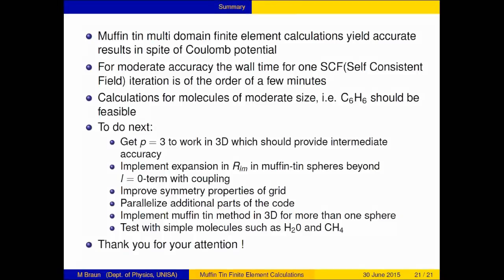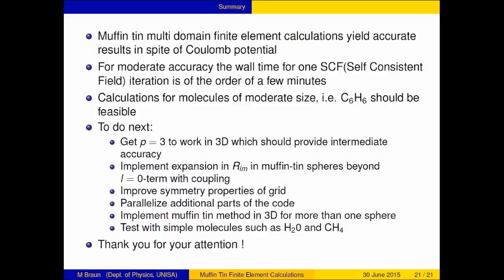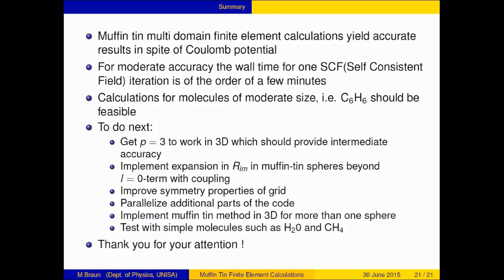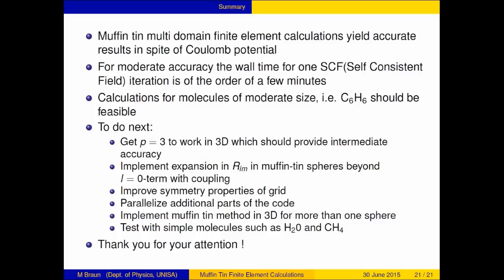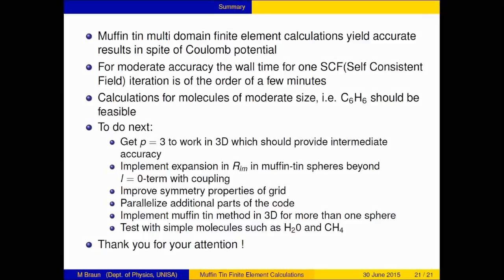The summary is that if you do this muffin tin finite element calculation, I do get accurate results. In two dimensions I can do one iteration. I would like to now do C6H6 benzene. At some point, I need to fix the bug with P equals 3. I do need a proper multi-channel calculation inside of the sphere. I also need to improve the symmetry properties of the grid. I need to speak to the GMSH experts in the audience because my automatic grid generation doesn't give me an isotropic grid. There's also some parallelization still possible. Finally, if I want to do a real molecule, I need more than one nucleus. I would like to do water and methane. Thank you for your attention.